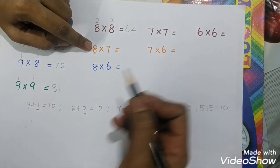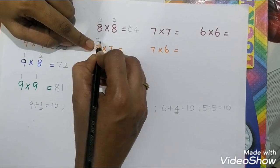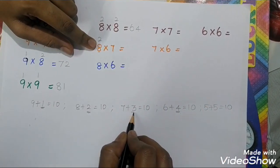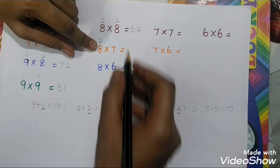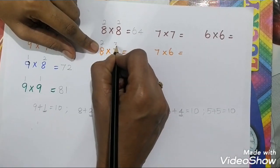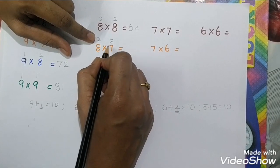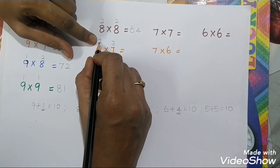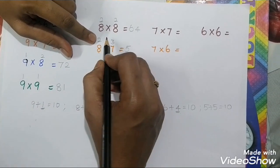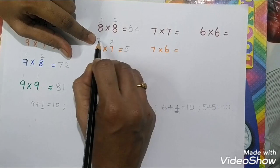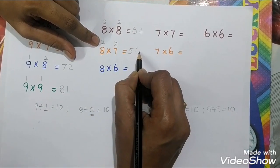For 8 times 7: 8's friend is 2, and 7's friend is 3. Cross subtraction: 7 subtract 2 equals 5. Multiply the friends: 2 times 3 equals 6. So 8 times 7 are 56.